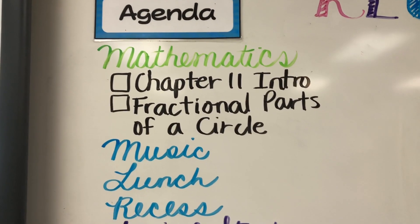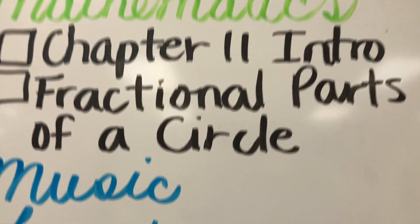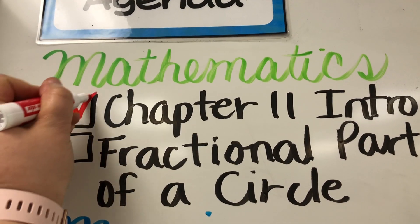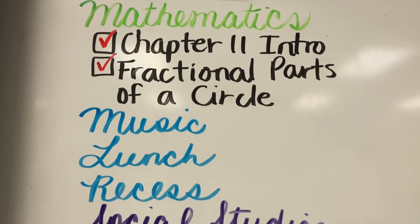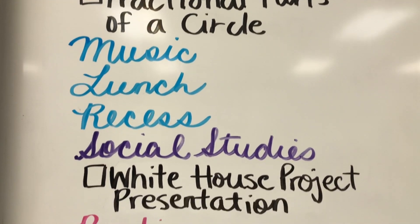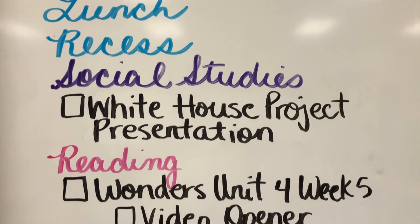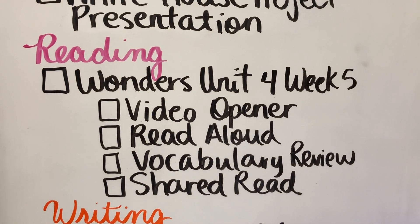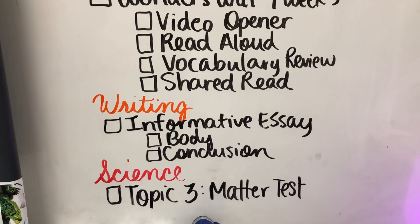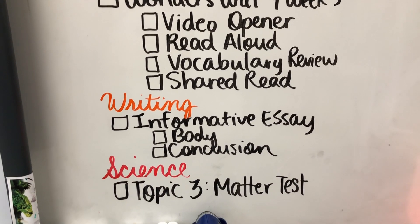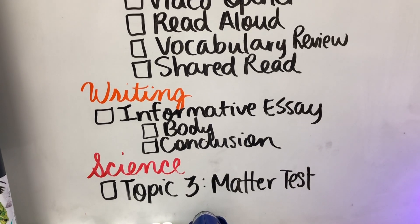This is our schedule for today. We have already completed our math lesson — we introduced chapter 11 and went over fractional parts of a circle. After that is lunch and recess, then the students have their White House project due today, so they'll be presenting. Then we're going to start a new poetry unit in our wonder series. In writing, we'll finish the informative essay from last week, and in science they'll take a topic three test on matter.